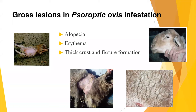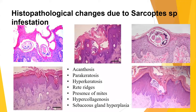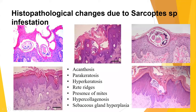Gross lesions caused by sarcoptic and psoroptic mites in goats include dermatitis in the periocular area, alopecia in the ear and muzzle, thickening of the skin, loss of wool, and crust formation. Self-inflicting traumas can also be seen. Histopathological changes from sarcoptic mites include a visible burrow tract in the epidermis, acanthosis, parakeratosis, hyperkeratosis, hypercollagenosis, and hyperplasia of sebaceous glands. Mites can be seen under the microscope within these lesions.